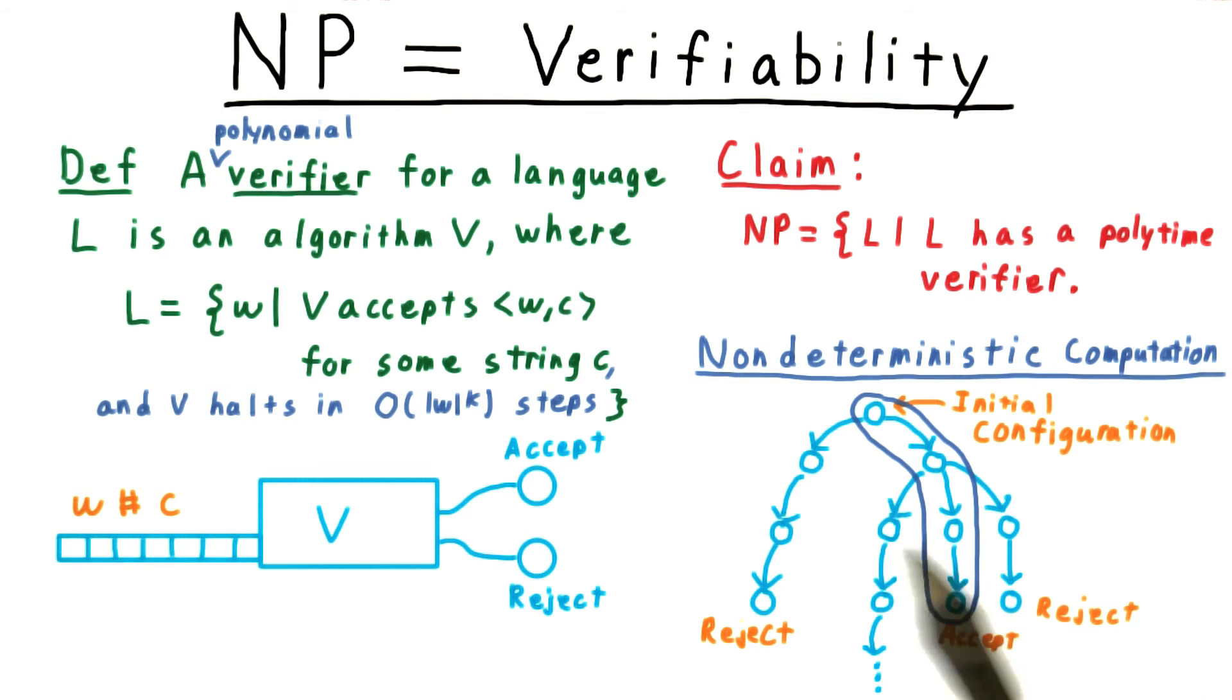Now, a verifier can't simulate the whole tree of the non-deterministic machine in polynomial time, but it can simulate a single path. It just needs to know which path to simulate. But this is what the certificate can tell it. The certificate can act as directions for which turns to make in order to find the accepting computation of the non-deterministic machine. Hence, if there's a non-deterministic machine that can recognize the language, there's a verifier that can verify it.